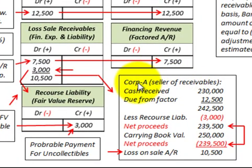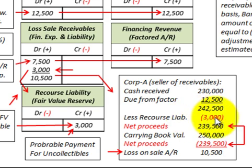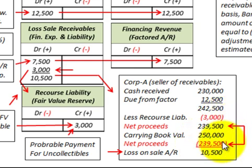To verify: Corporation A receives cash of $230,000 plus the due from factor of $12,500, totaling $242,500. Subtracting the recourse liability of $3,000 gives net proceeds of $239,500. The carrying book value of the accounts receivable is $250,000; subtracting net proceeds of $239,500 gives a loss on sales of receivables of $10,500.